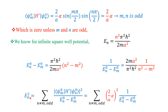By definition, the second order energy correction is a summation over m ≠ n — with both required to be odd — of |⟨ψ_m | H' | ψ_n⟩|² divided by (E_n^0 − E_m^0). Taking the square of the inner product gives (2/a · α)² = 4α²/a². We then substitute 2Ma²/(π²ℏ²(n² − m²)) for 1/(E_n − E_m).